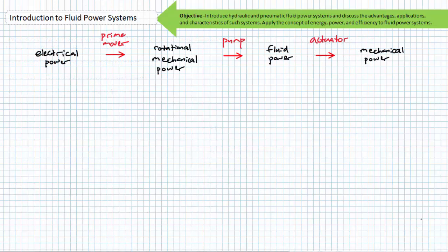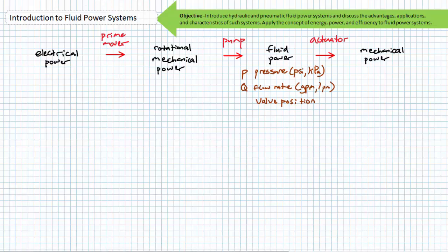On a very basic level, fluid power systems are power conversion systems where one form of input is changed to fluid power to eventually perform some task. Fluid power is characterized and controlled by pressure, flow rate, and valve position, among other properties.